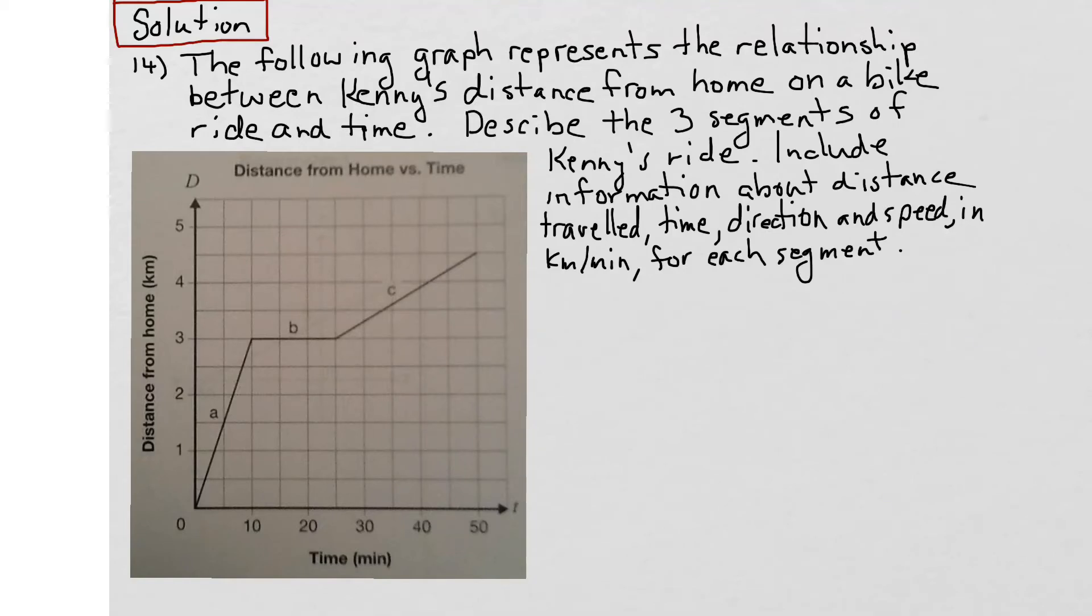In this question, we're given a graph that represents the distance that Kenny traveled from home versus time. There are three distinct segments of Kenny's ride, A, B, and C, and we're asked to describe them in terms of distance traveled, time, direction, and speed.